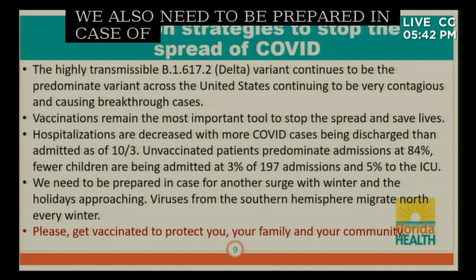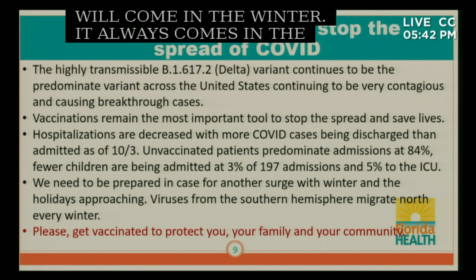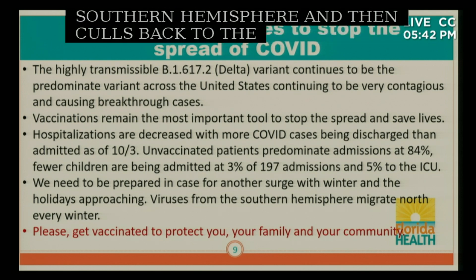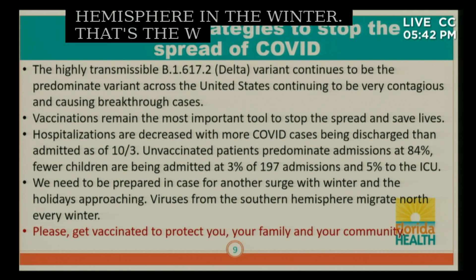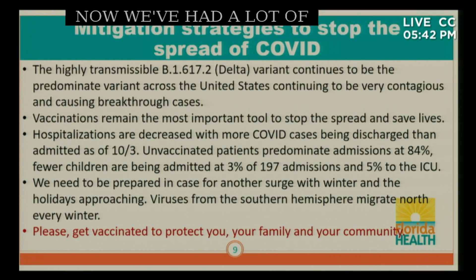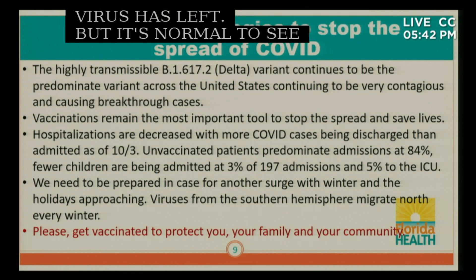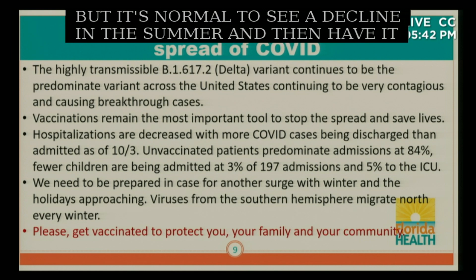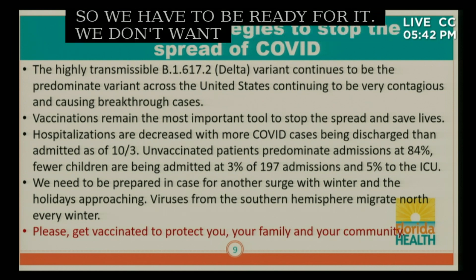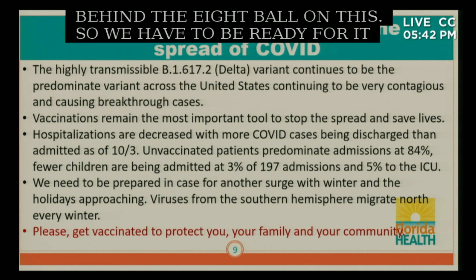We're going in the right direction, but it's still high transmission and we need to be prepared in case of another surge, which will come in the winter. The virus goes to the southern hemisphere and then comes back to the northern hemisphere in the winter — that's how viruses move. We've had a lot of transmission so not all the virus has left, but it's normal to see a decline in the summer and then have it come back up in the winter. We have to be ready and make plans.